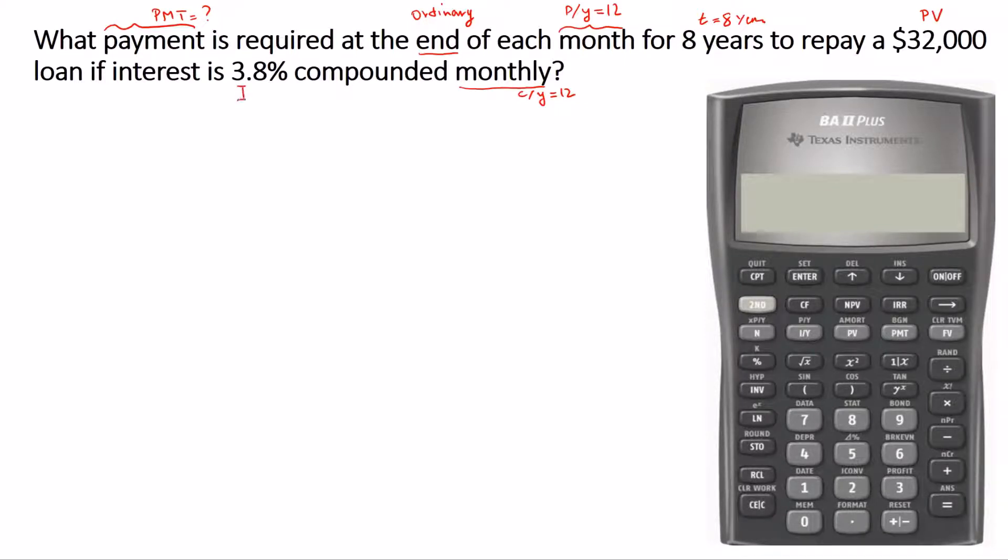Before we enter the values, we need to clear the TVM worksheet. We press 2nd and then press FV.